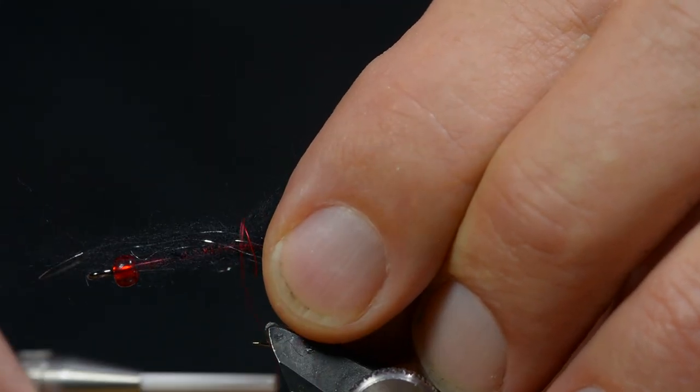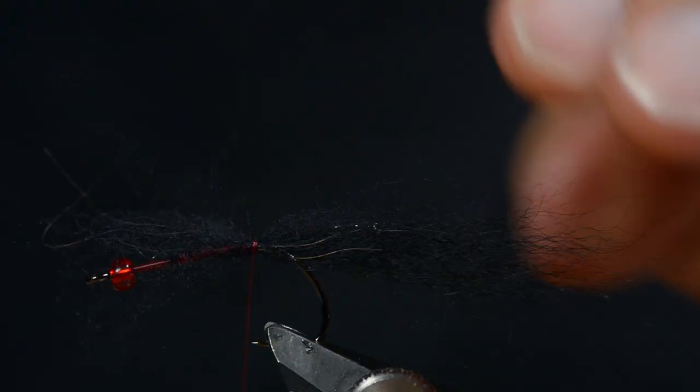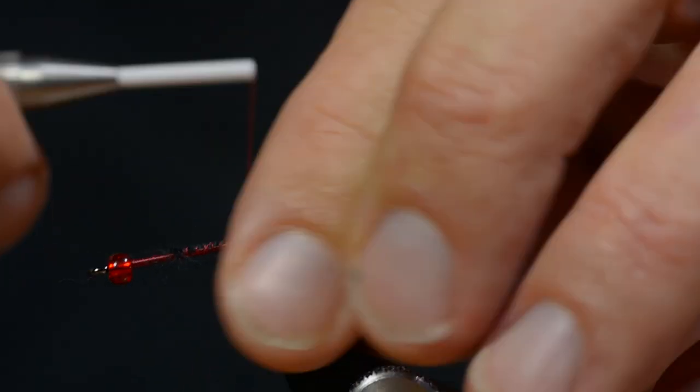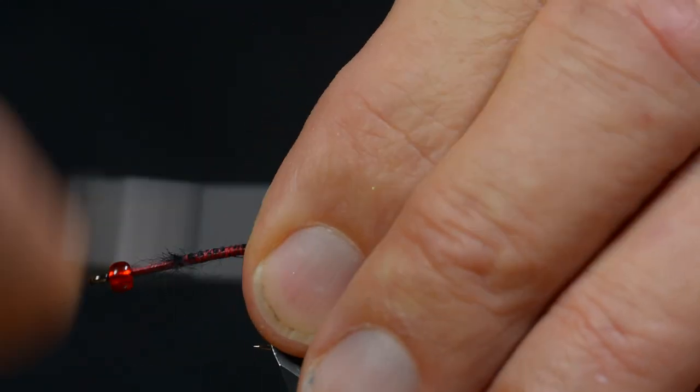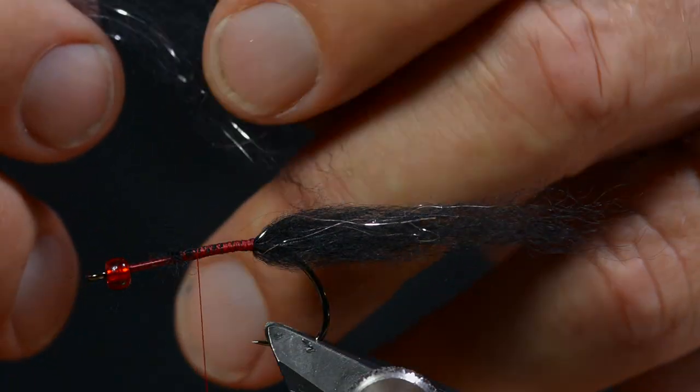I make loose turns around the dubbing and tighten up, letting the fibers roll all the way around the shank. That's the basic technique for tying this fly.